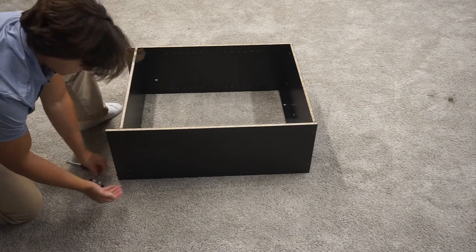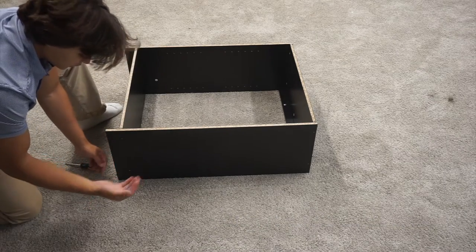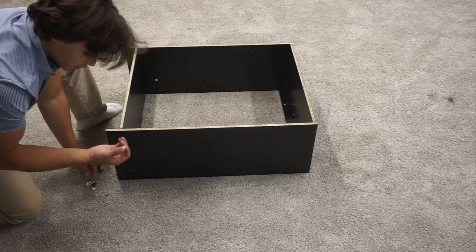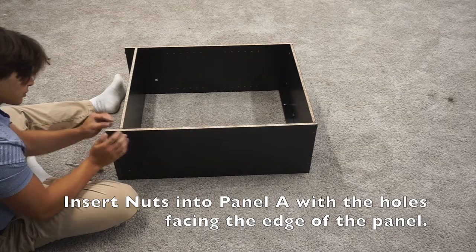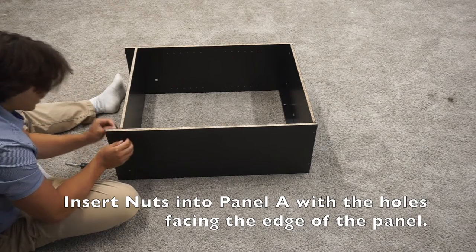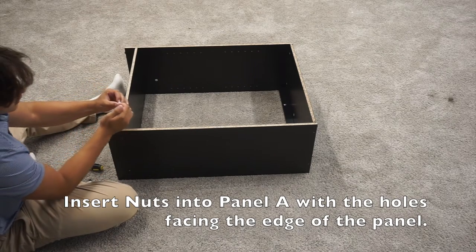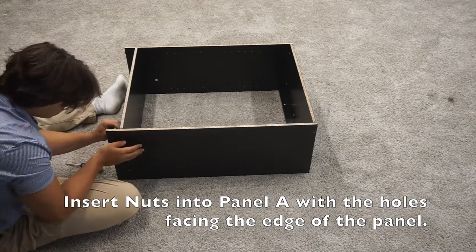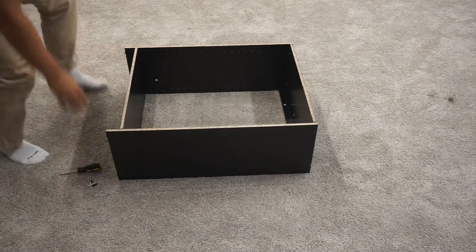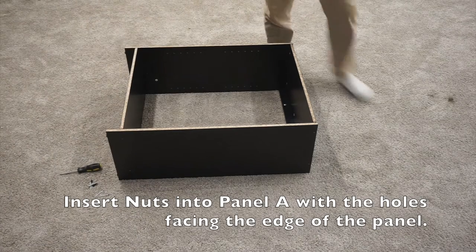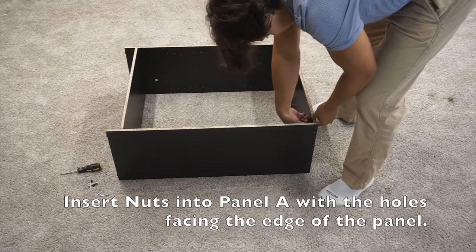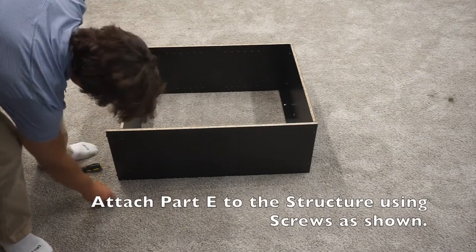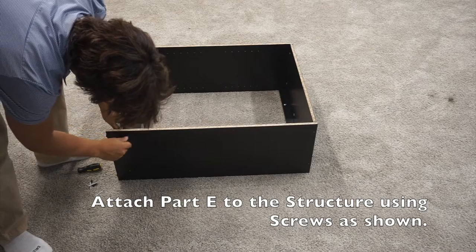Then you will want to grab four nuts, four screws, and four caps. You want to do two nuts into this panel. You want to make it so that this little hole is facing this way towards the E panel. Insert the other two nuts into this panel. Then you can secure it with two screws on each side.